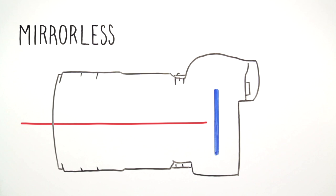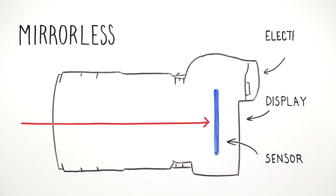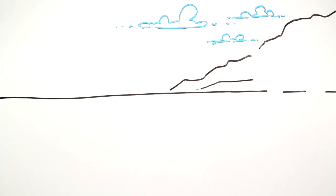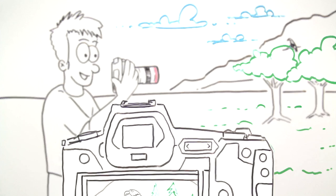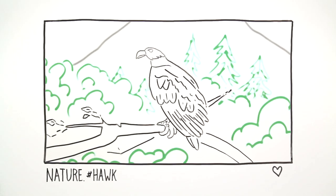They send the image directly to the sensor which then shows the image on the display or in the electronic viewfinder. With this approach, you actually see the exposure and depth of field before you take the shot. So what you see is literally what you get.